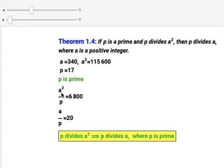That means if a squared is divided by p, which is a prime number, then a also will be divided by p. That's what the theorem says.